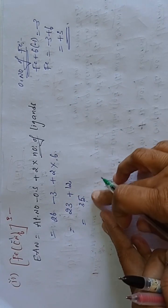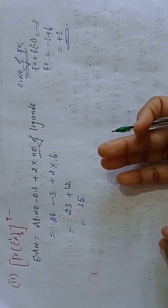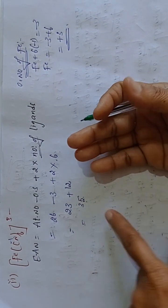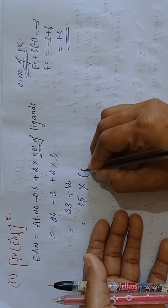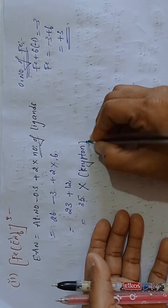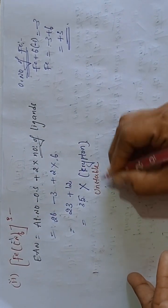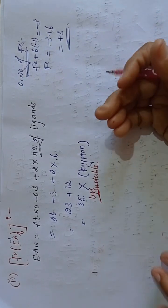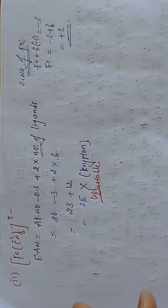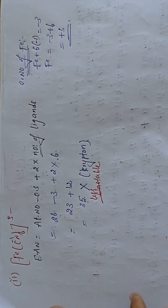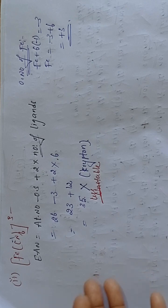Krypton's atomic number is 36, but EAN here is 35 — it is not the atomic number of Krypton. So that's why [Fe(CN)₆]³⁻ is unstable, or less stable. Which is more stable? The first compound, [Fe(CN)₆]⁴⁻. The compound whose EAN equals the atomic number of the nearest noble gas element is more stable.